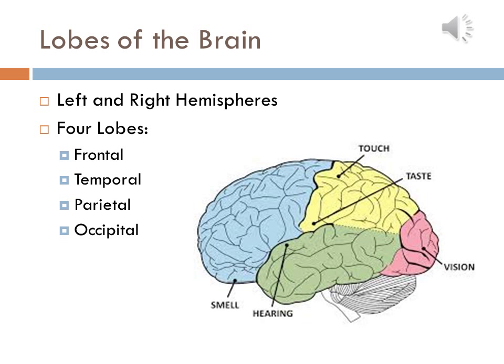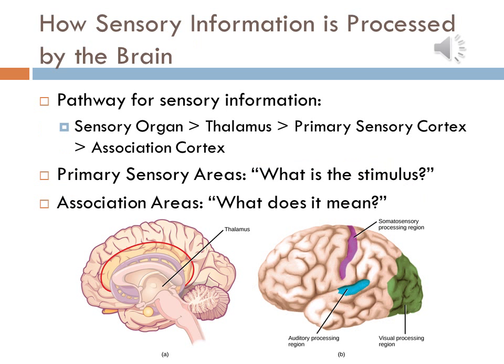Each hemisphere of the brain or cerebral cortex has four lobes: frontal, temporal, parietal, and occipital lobes. These contain all of the brain's primary sensory areas as well as all of its association areas. Most sensory information must first pass through the thalamus before being directed to the appropriate primary sensory area of the brain, where the brain determines what is being perceived. This information is then relayed to an adjacent association area, where the brain analyzes the stimulus and figures out what it means.